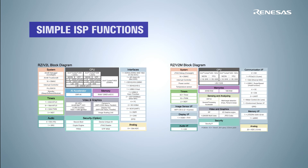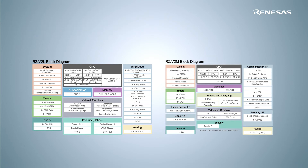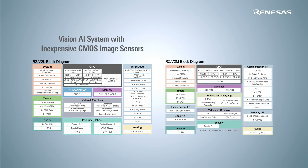In addition to AI processing, the RZ-V2L microprocessor is equipped with simple ISP functions based on the DRP function of the DRP-AI Accelerator, giving users options to build a Vision AI system with inexpensive CMOS image sensors.